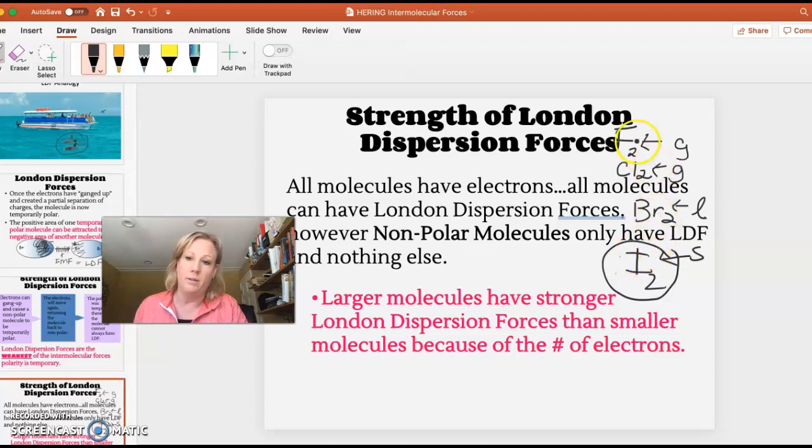So it's still the weakest of the types of IMFs, but if you have more electrons it gets stronger.